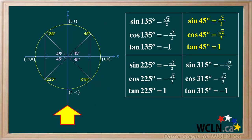At this point, it's good to review other angles with a reference angle of 45 degrees that have exact values. These include 135 degrees, 225 degrees, and 315 degrees. Using the values of trig functions for 45 degrees and knowing the signs of sine, cosine, and tangent in each quadrant will help you remember these.